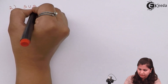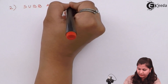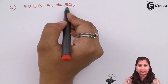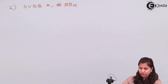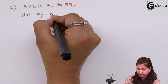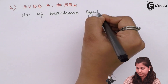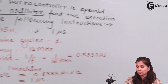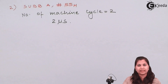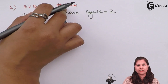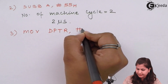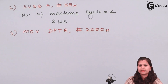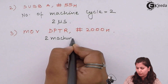The next instruction is SUBB A, 55H — subtracting this 8-bit data from the accumulator along with the carry. The number of machine cycles for this instruction is 2, so it requires 2 microseconds. The next instruction is MOV DPTR with a 16-bit number, which also requires 2 machine cycles, equaling 2 microseconds.